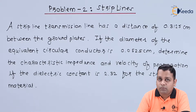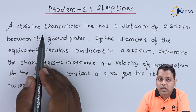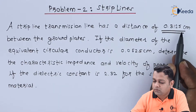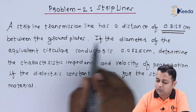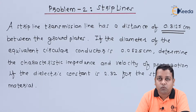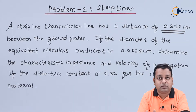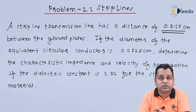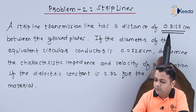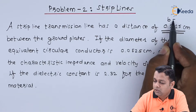The problem gives us the information that the strip line has 0.3125 centimeters of separation between the two ground planes. In the very first video of this chapter, we became well-acquainted with the structural diagram of strip lines — two ground planes with the central conductor of width W in between. This separation is the value of small b.